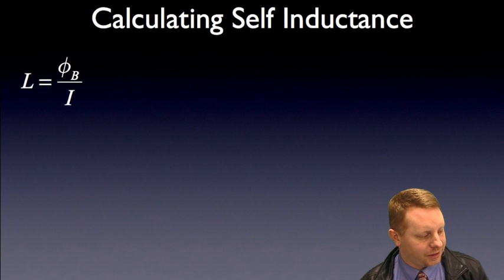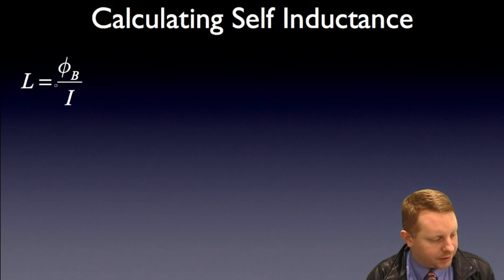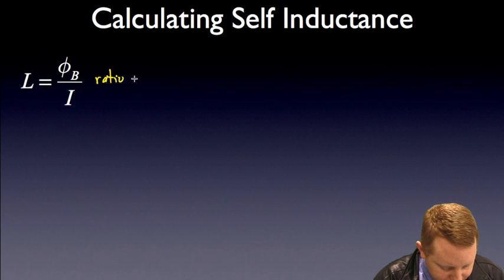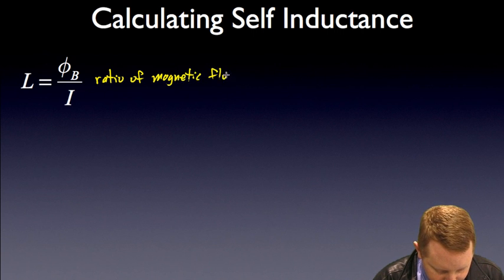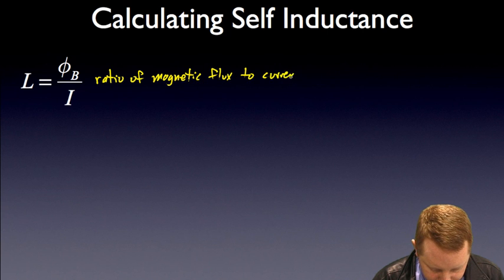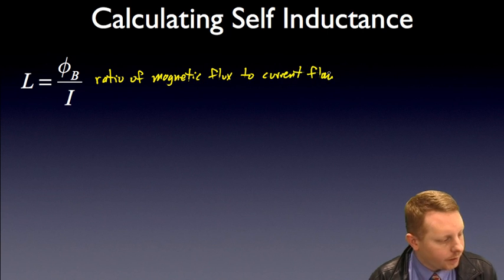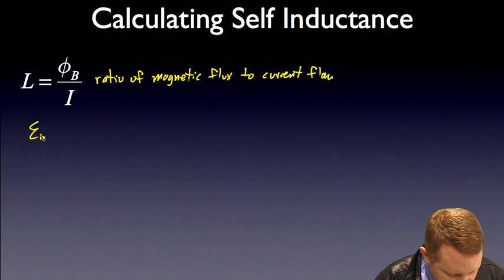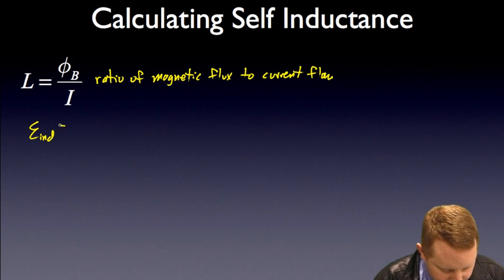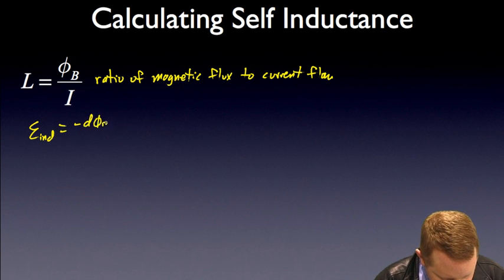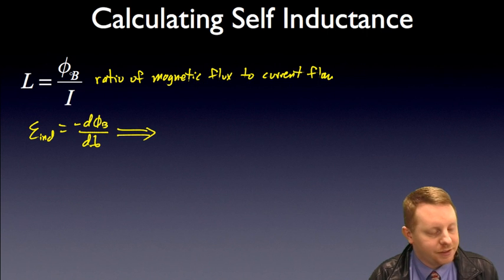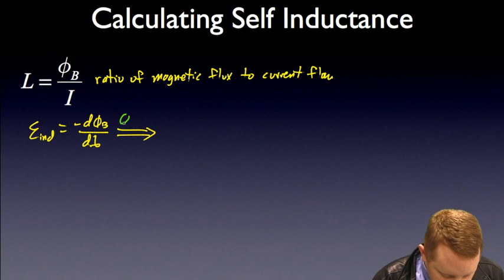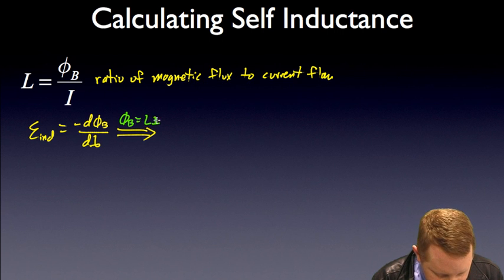Let's talk about how we calculate self-inductance. To begin with, self-inductance is the ratio of the magnetic flux, phi b, to the current flowing through that circuit. And if that's the case, we could then apply Faraday's law to say that the induced EMF is minus the time rate of change of the flux. But we know from our previous expression that the magnetic flux is going to be the inductance times the current.